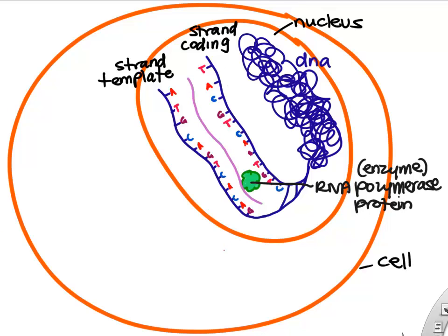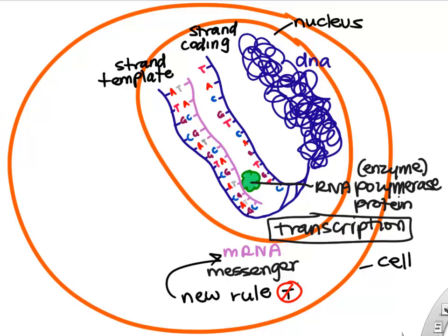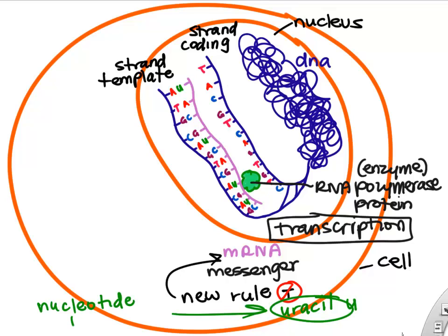The enzyme that actually makes the mRNA is called RNA polymerase — it's just a protein that your cells build, and it can copy DNA and make a complementary strand of RNA. We call it mRNA, or messenger RNA. RNA has a similar phosphate-sugar backbone, but the sugar is ribose instead of deoxyribose. We build in complementary nucleotides following the rules when we make mRNA — A's and T's, C's and G's. One new rule: when we build mRNA, instead of T's we use U's — U stands for uracil, which is a nucleotide we find in RNA.